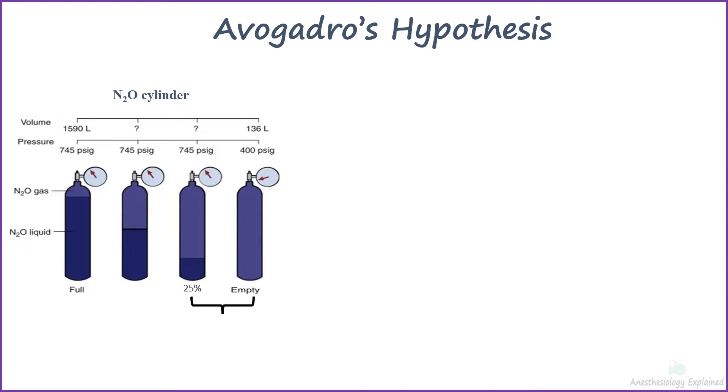The pressure will remain constant until 75% of the 1590 liters of gas is consumed, which is approximately equal to 400 liters. Prior to this point, the cylinder must be weighed to determine the amount of gas.